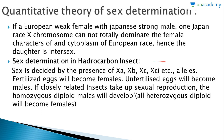In Hymenoptera insect sex determination, sex is decided by the presence of Xa, Xb, Xc, etc. Fertilized eggs become females; unfertilized eggs become males. If closely related insects take up sexual reproduction, homozygous diploid males may develop, while all heterozygous diploid individuals become females.